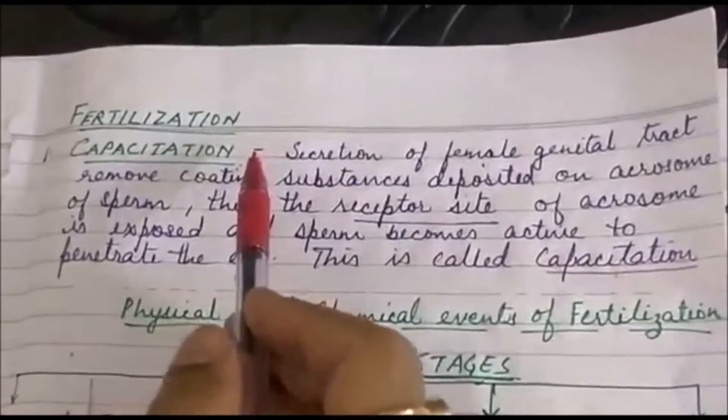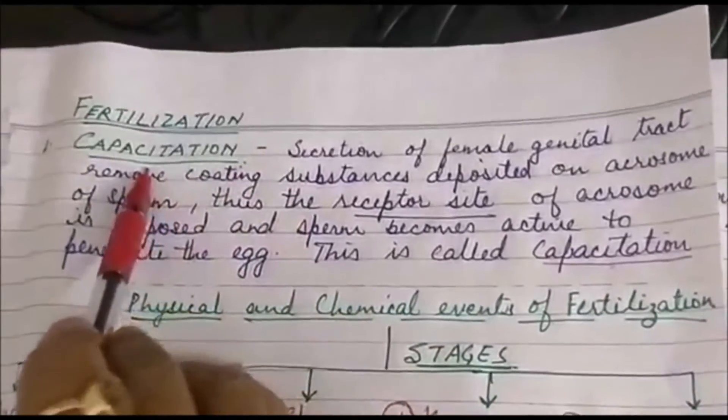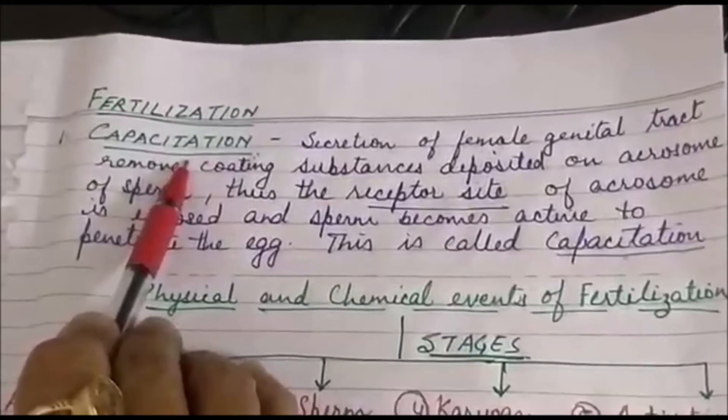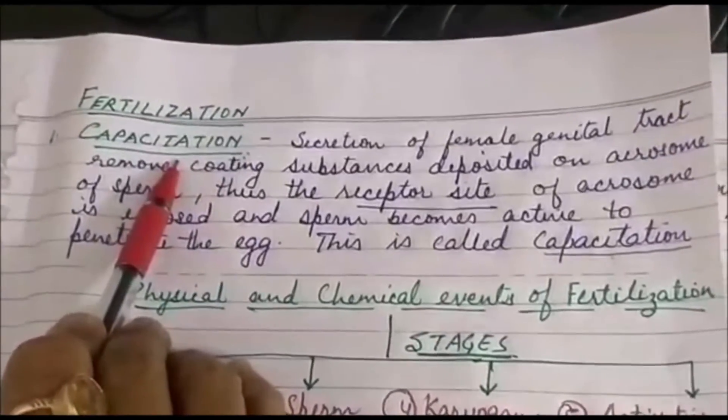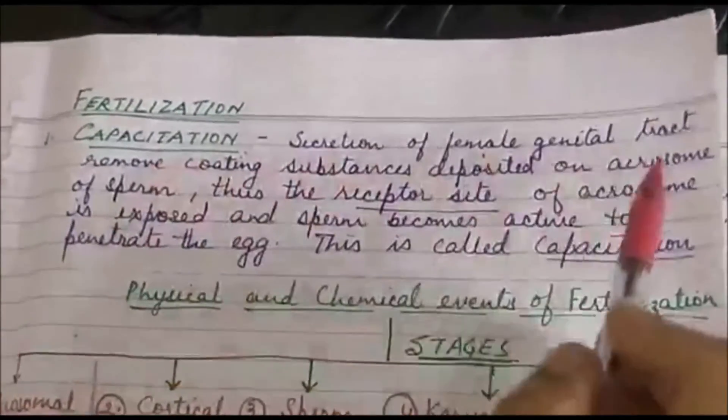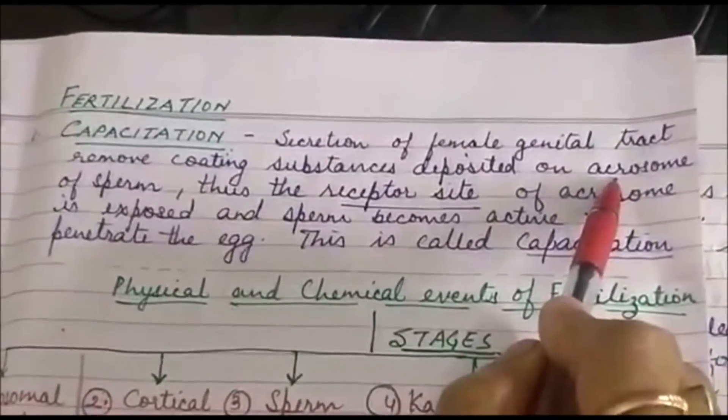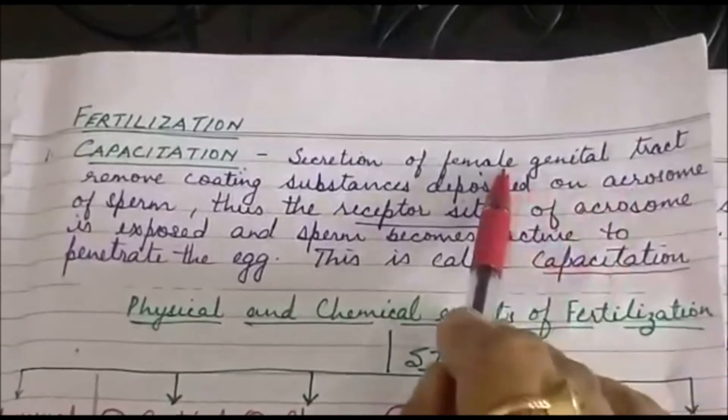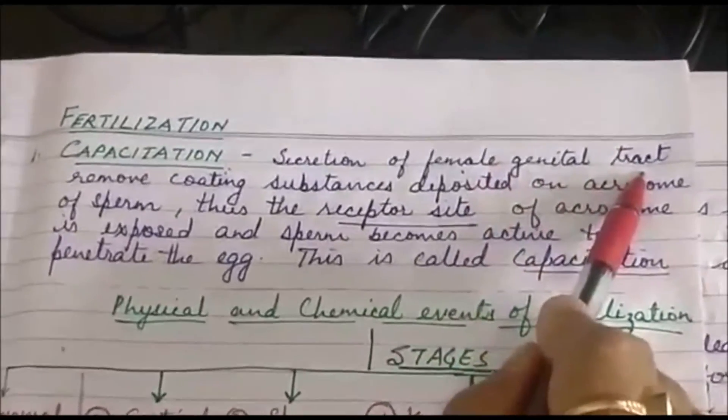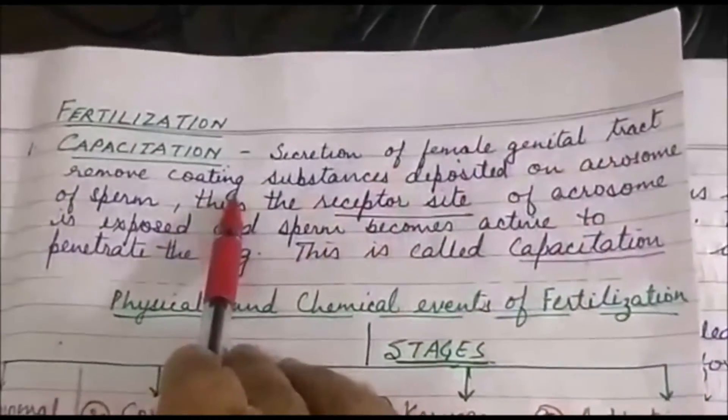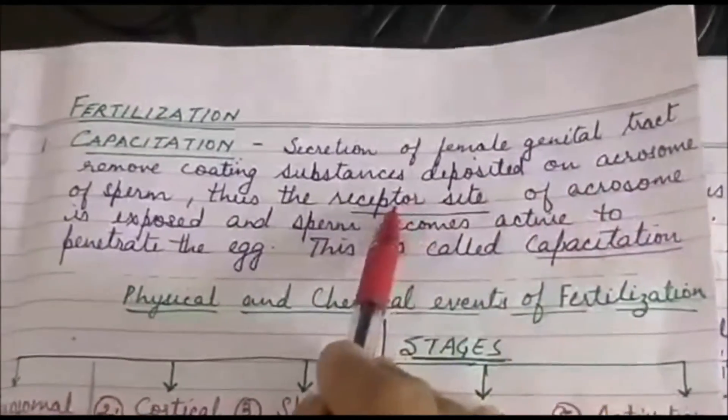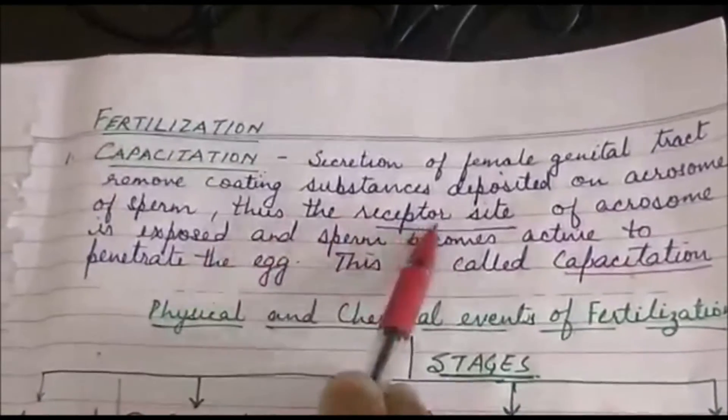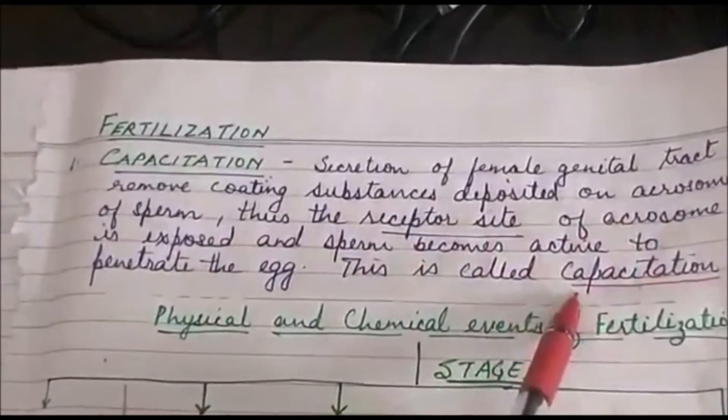In humans, this fertilization has many steps. The very first step of fertilization is capacitation. If you remember the structure of sperm, the head of the sperm has got acrosome. Acrosome contains large number of hydrolytic enzymes. The moment the sperm enters into the female genital tract, this coating which is present on the acrosome is removed and the receptor site of the acrosome is exposed. This exposure of the receptor site of acrosome is known as capacitation.